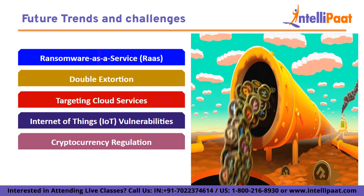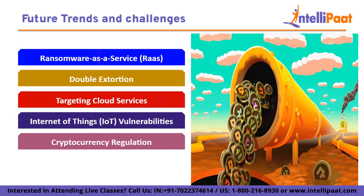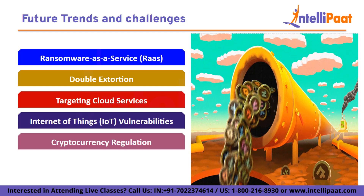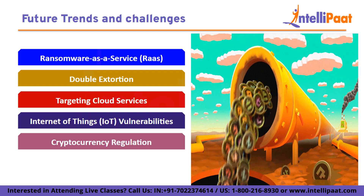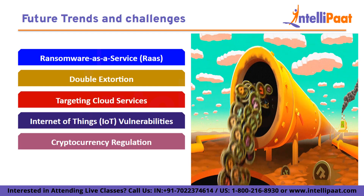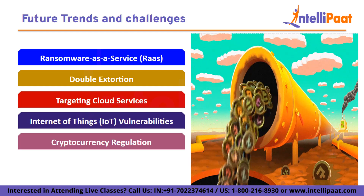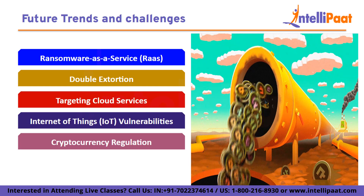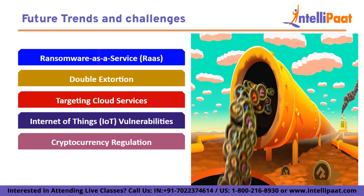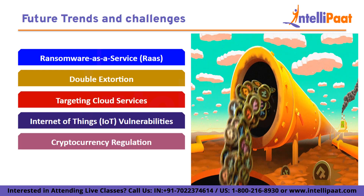Cryptocurrency regulation: the use of cryptocurrencies such as Bitcoin for ransom payments provides attackers with anonymity. As governments and regulatory bodies enhance cryptocurrency regulation, attackers may explore alternative payment methods or anonymous cryptocurrencies.